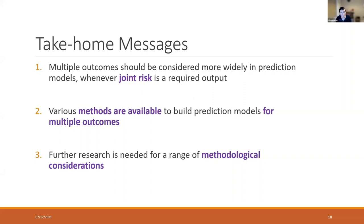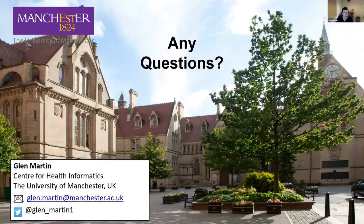To sum up: multiple outcomes should be considered more widely in risk prediction modelling, especially when we're interested in joint risk. There are lots of methods available to do that. But I think this disconnect between the statistics world and the prediction modelling world needs to be bridged through both methods research and guidance papers, and hopefully some of my work can try and tackle that.